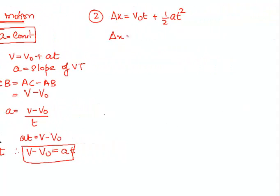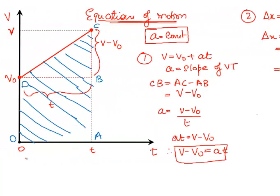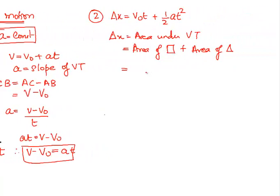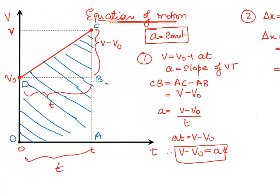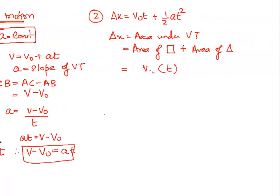Delta x is going to be the area under V-t. It's going to be the area of rectangle plus area of triangle. What is the area of rectangle? That's basically the length, which is this value, that is T, into the breadth. AB is nothing but V0. So that's V0 here.